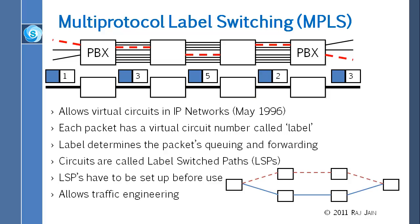Once you set up the LSPs, you can do traffic engineering — deciding which traffic goes through which path. With IP, you cannot decide that; all traffic takes the shortest path, meaning other paths are unused and the shortest path is congested by design. With MPLS, you can set up a blue circuit and a red circuit between the same source and destination. When packets come in, they are assigned to the blue or red circuit based on the label, and each follows its own path.